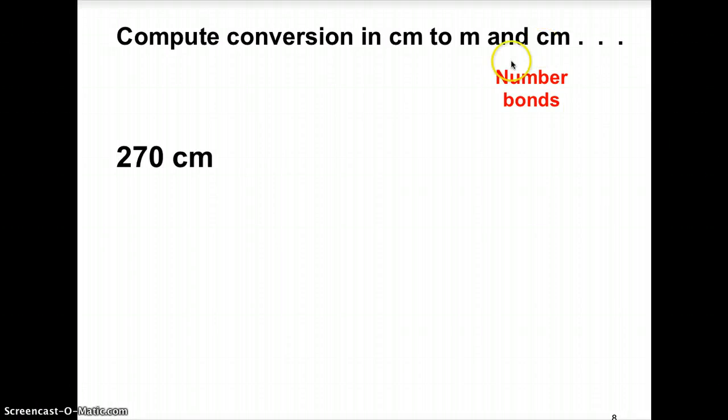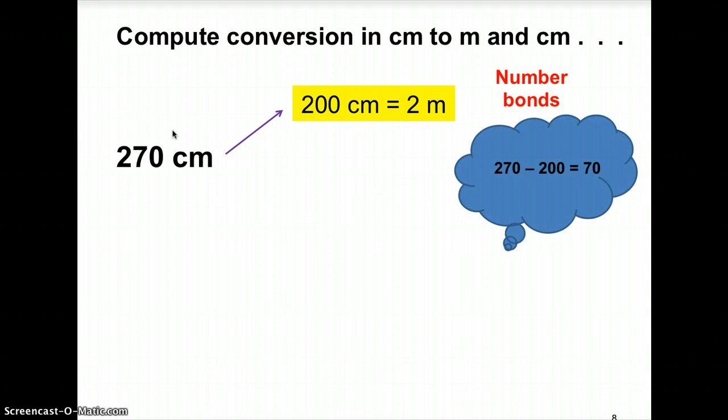Yes, do remember to use number bonds once again. Do ask yourself, in 270, what are the two different numbers that you see that make up 270? Well, you should be able to tell me, in 270, there is 200 as well as, yes, 270 take away 200, you will get 70.